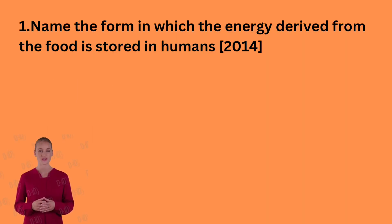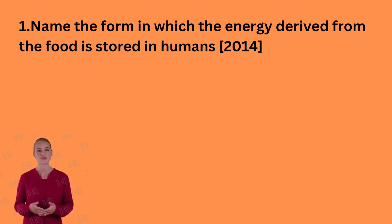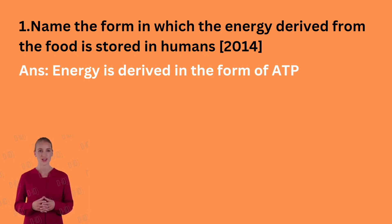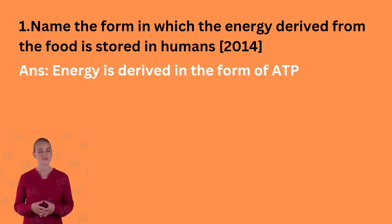This question came in the year 2014. Name the form in which the energy derived from the food is stored in humans. The energy derived from the food is stored in the form of ATP, adenosine triphosphate, which is a chemical form of energy.